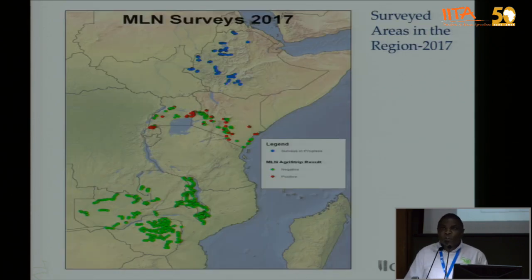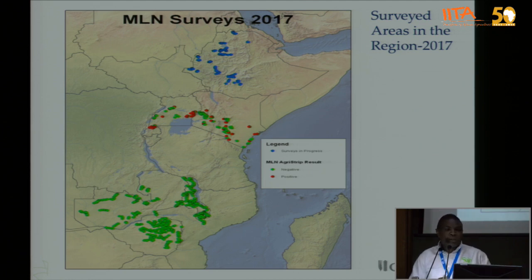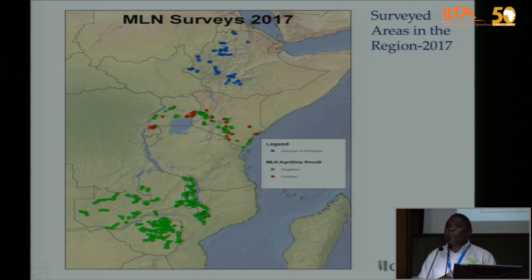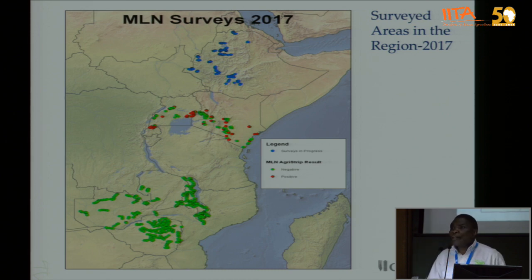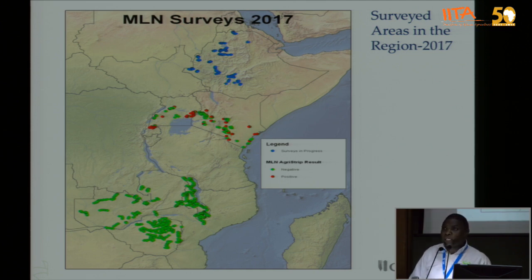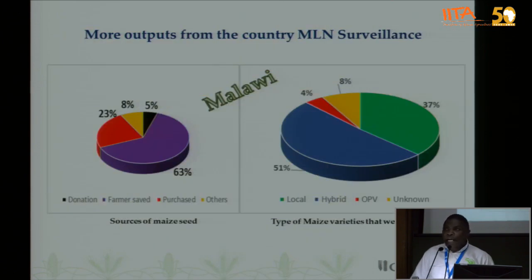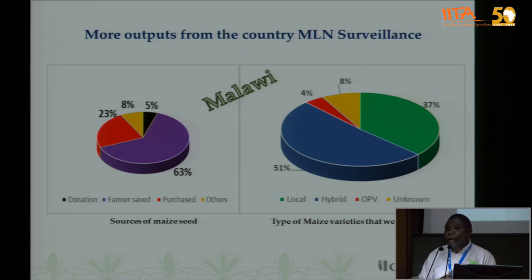This regional map shows where we are working. Ethiopia appears in blue because the activity is still ongoing there. After two weeks, they will upload the positives and negatives, and you will be able to see where MLN is — denoted by red dots — while green dots show MLN is absent at those surveillance points. During the surveillance process, you can collect and analyze as much information as possible and publish it.